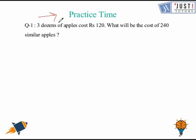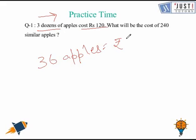In this question, you have been given the cost of 3 dozens of apples. So 3 dozens of apples means 36 apples, which costs rupees 120. We need to find out the cost of 240 similar apples.